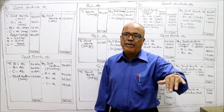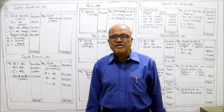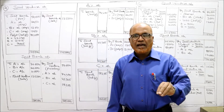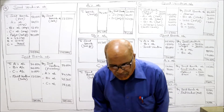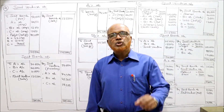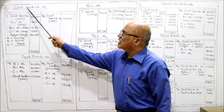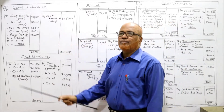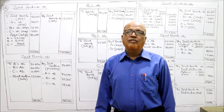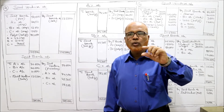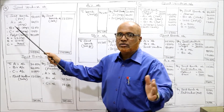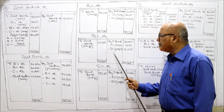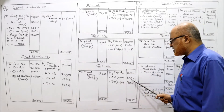Now A incurred expenses of Rs. 2,450. Normally expenses will be paid from the joint bank account, but here A has paid some expenses from his own pocket - Rs. 2,450. Entry will be joint venture account debit to A's account, expenses Rs. 2,450. And A's account is credited by joint venture expenses Rs. 2,450. B and C both have incurred Rs. 1,250 each. Entry: joint venture account debit to B's account expenses Rs. 1,250 and to C's account expenses Rs. 1,250. B and C accounts are credited by joint venture expenses Rs. 1,250 each.